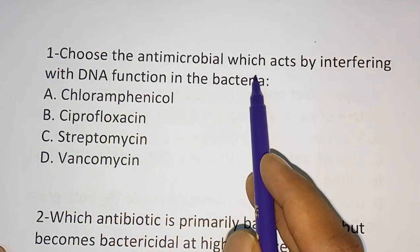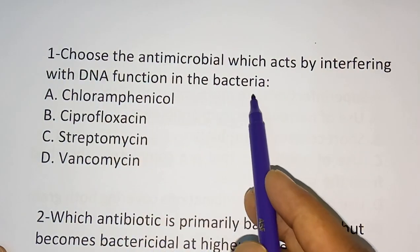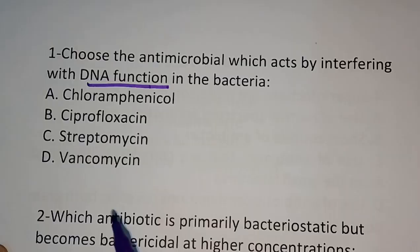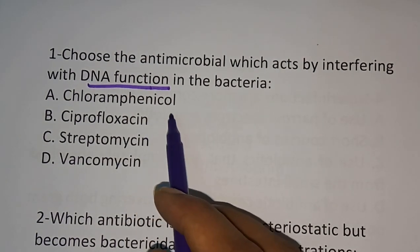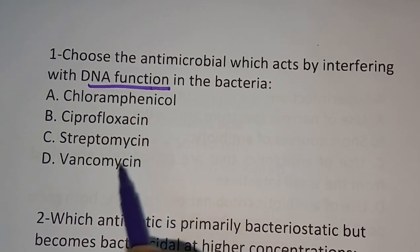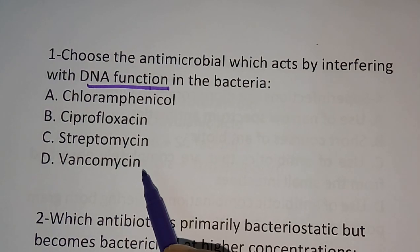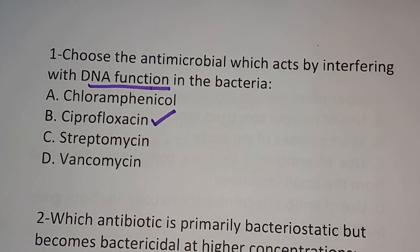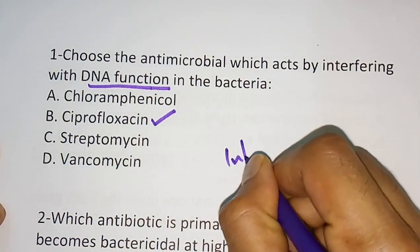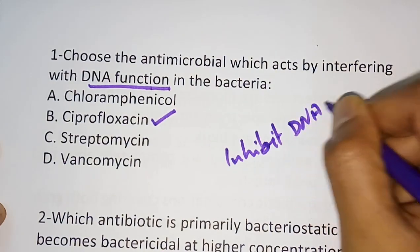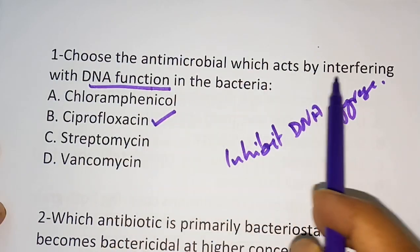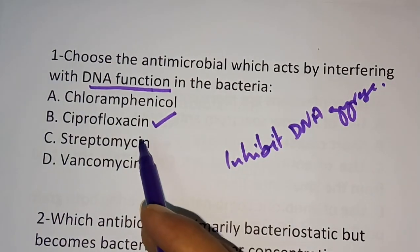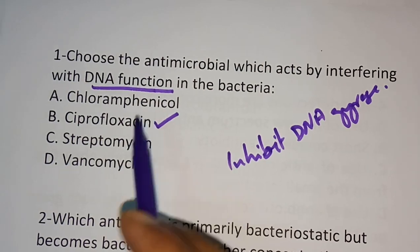The first question: choose the antimicrobial which acts by interfering with the DNA function in bacteria. Options are: (a) chloramphenicol, (b) ciprofloxacin, (c) streptomycin, (d) vancomycin. The correct answer is option (b) ciprofloxacin. Ciprofloxacin inhibits DNA gyrase, which is why it interferes with DNA function.